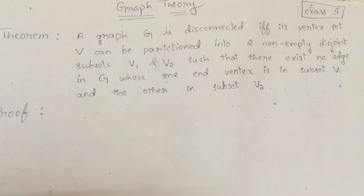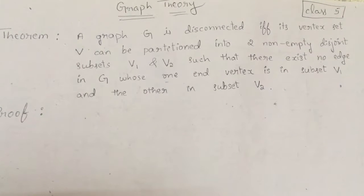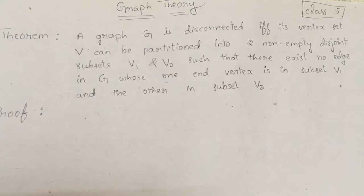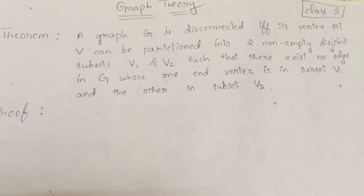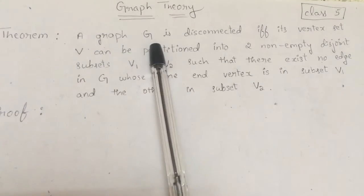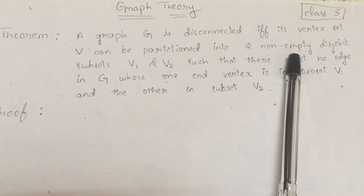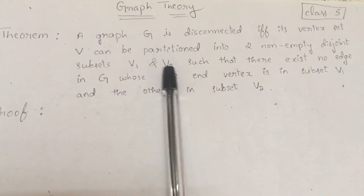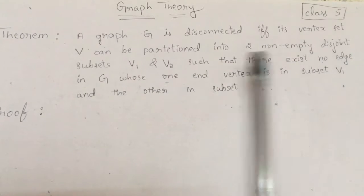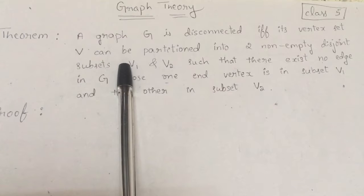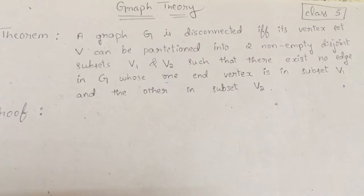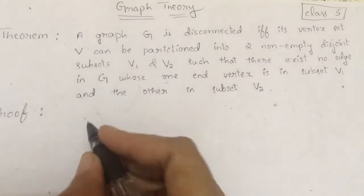Today's class will prove a theorem based on the disconnectivity of a graph. A graph which is not connected is called a disconnected graph. A connected graph means there is at least one path between every pair of vertices. The theorem states: a graph G is disconnected if and only if its vertex set V can be partitioned into two disjoint non-empty subsets V1 and V2 such that there exists no edge in G whose one end vertex is in V1 and the other is in V2.